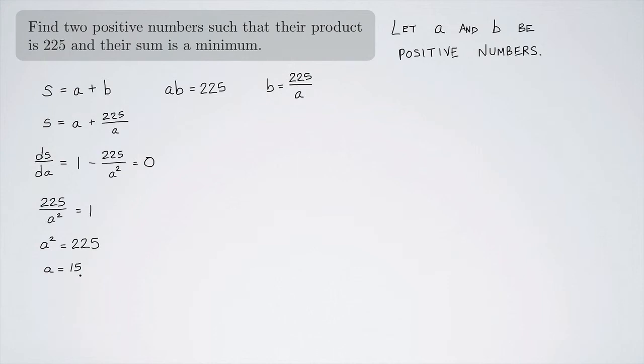And if A is 15, B, remember, was 225 divided by A. So B is 225 divided by 15, which is also 15.